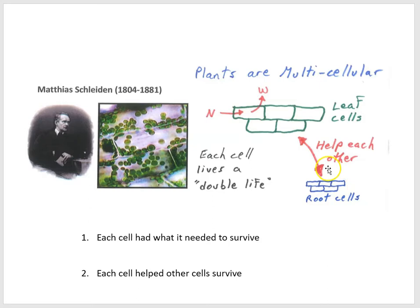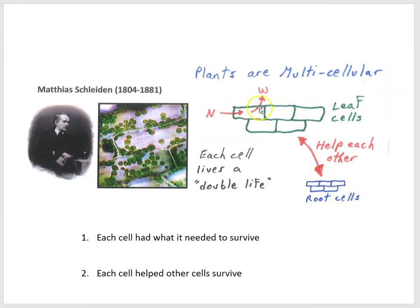Schleiden began to see a plant as a cooperative effort between different kinds of specialized cells — the cells were helping each other. He started to think of cells as living a double life. On the one hand, each cell had what it needed to survive. However, it was only by virtue of the fact that each cell was helping the other cells survive. Root cells transport water up to the rest of the plant, and leaf cells make sugar and deliver it down to the root cells. Different cells perform different jobs, but they help each other so that every cell in the organism has what it needs to survive.